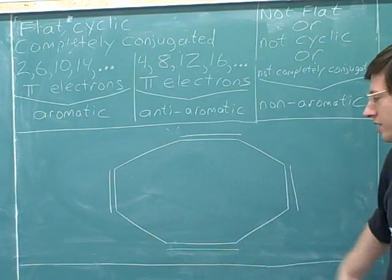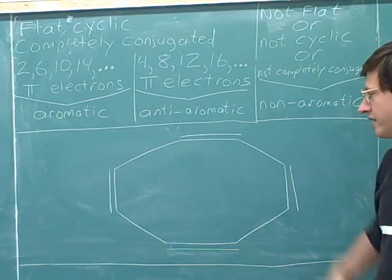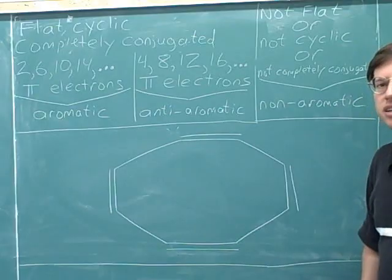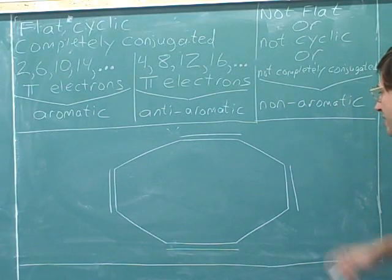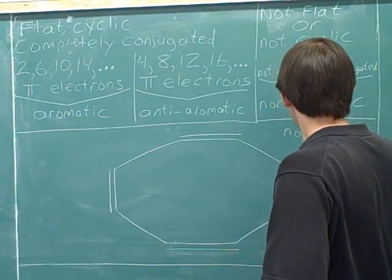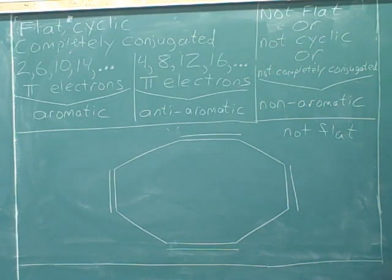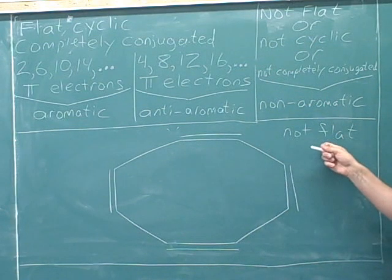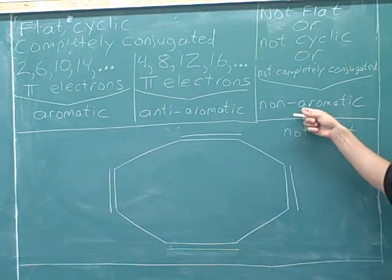Well, this one was kind of a trap question. This is a trick question because it turns out that an eight-membered ring with alternating single and double bonds is not flat. An eight-membered ring with alternating single and double bonds is not flat. Therefore, this molecule is non-aromatic.